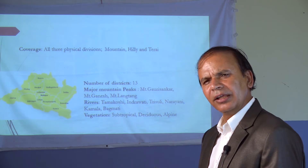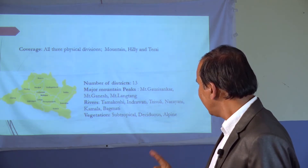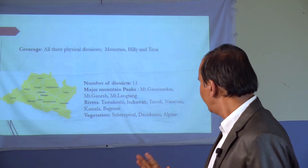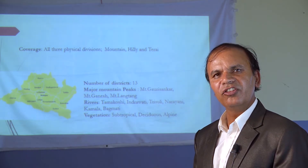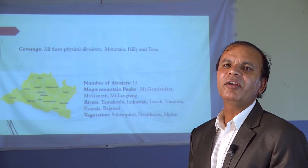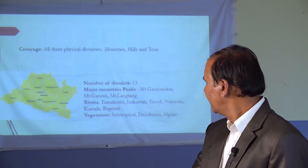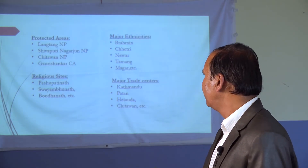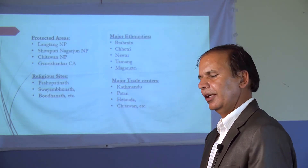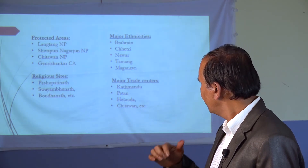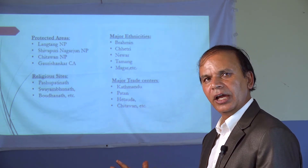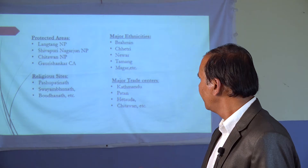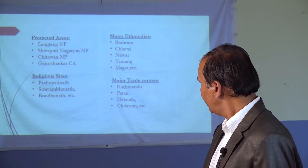Bagmati Province includes all three physical divisions of Nepal — mountain, hilly, and Tarai regions — from north to south. It has 13 districts. Mountain peaks here include Gaurishankar, Ganesh Himal, and Langtang. The major rivers flowing through the province are Tamakoshi, Indrawati, Trishuli, Narayani, Kamala, and Bagmati.